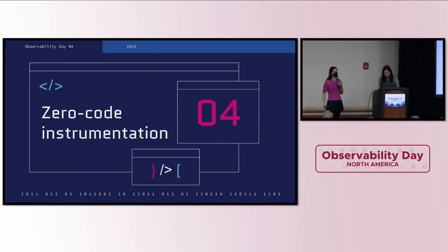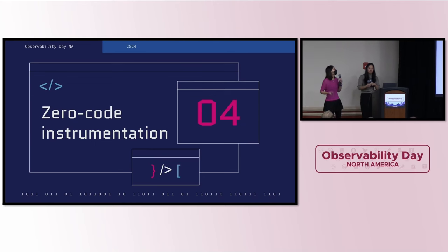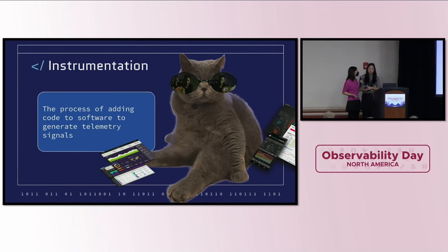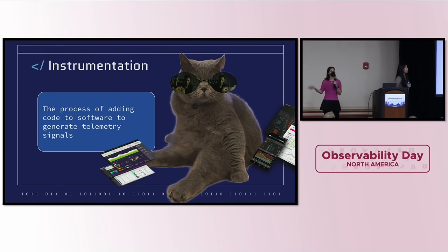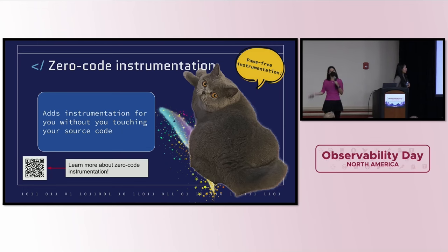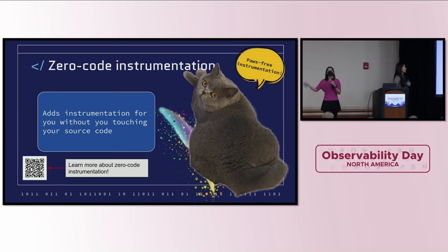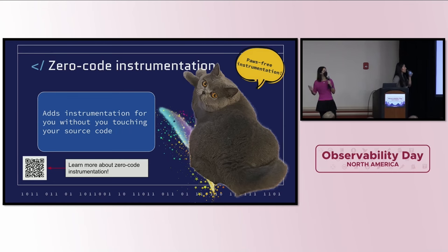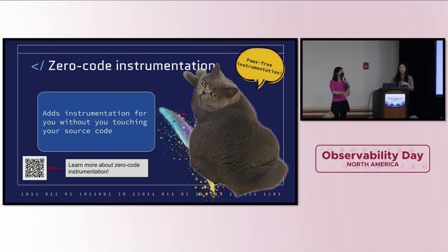Now we're going to talk about the auto-instrumentation capabilities of the OTEL operator. Instrumentation is the process of adding code to software to generate telemetry signals. There are two ways to instrument your code. We have zero code or auto instrumentation, where you do not have to touch your code — it's done courtesy of bytecode or shims that intercept your code at runtime or compile time and insert traces, metrics, and logs for you. OTEL supports auto-instrumentation for multiple languages including Java, .NET, Python, and more. The other mode is manual instrumentation, which requires the developer to go into code and add those traces, metrics, and logs.